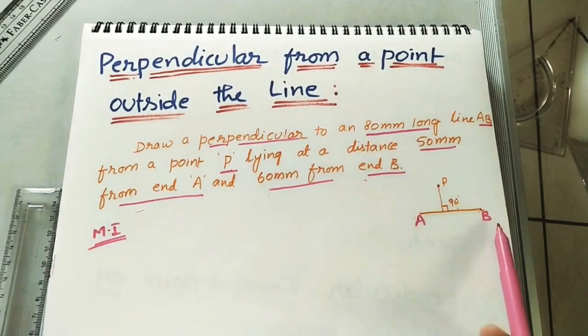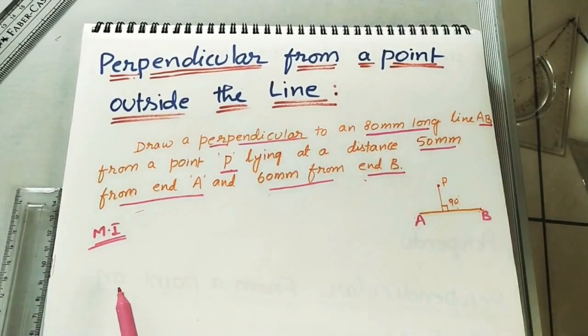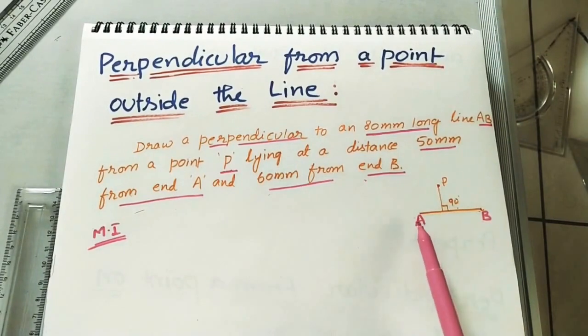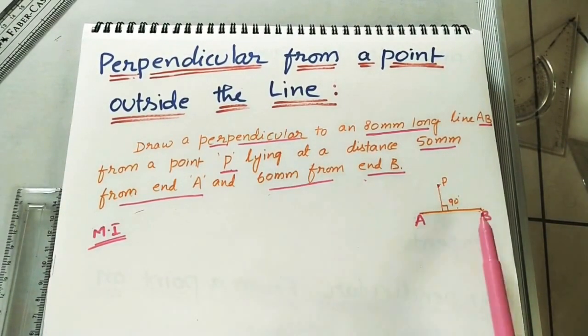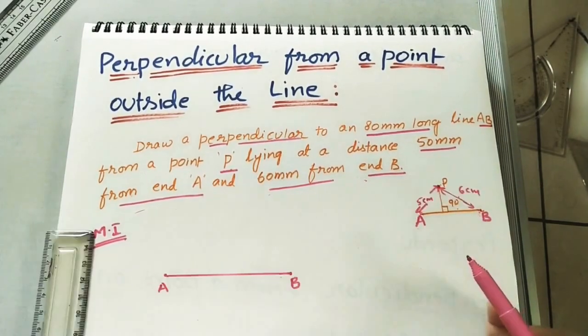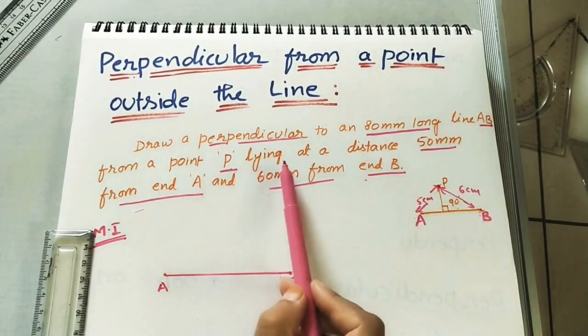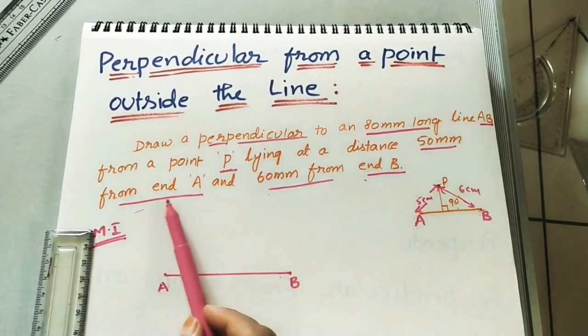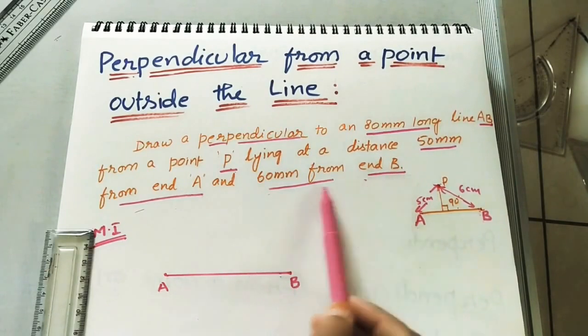Here I am taking 8 cm long line or 80 mm long line. The name of the line is AB. And this P point is at a distance 5 cm from A, and from P point it is 6 cm. The same thing I have written here. From a point P lying at a distance 5 cm from end A, from end B it is 6 cm.